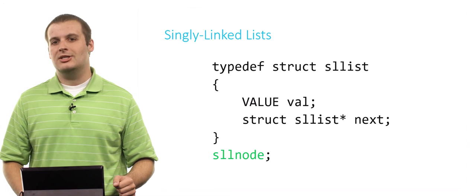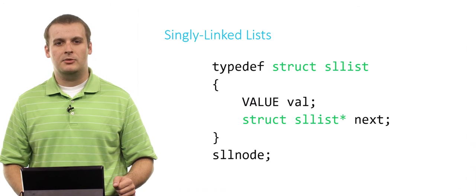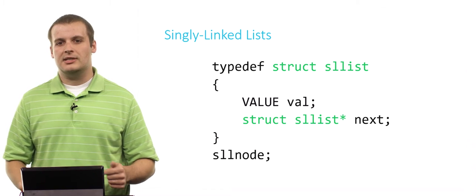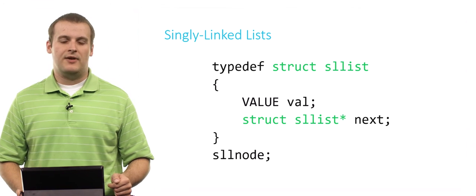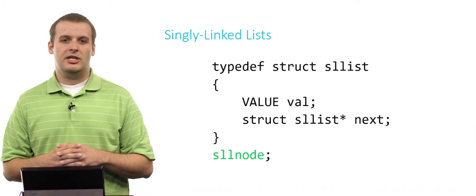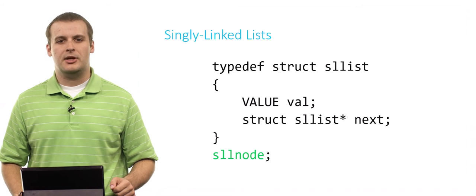Sometimes you might see definitions of structures that aren't self-referential that don't have a specifier name — it would just say typedef struct, open curly brace, and then define it. But if your struct is self-referential, as this one is, you need to specify a temporary type name. Ultimately, now that we've done this, we can just refer to these nodes as sllnodes for the rest of this video.